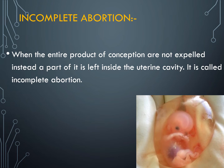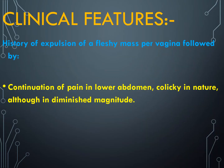Now moving forward to incomplete abortion — it is just the opposite of complete abortion. The definition of incomplete abortion is: when the entire product of conception is not expelled; instead, a part of it is left behind in the uterine cavity. This means the membrane, sac, placenta, and umbilical cord have not all come out — a part of the baby is still left behind inside the uterus.